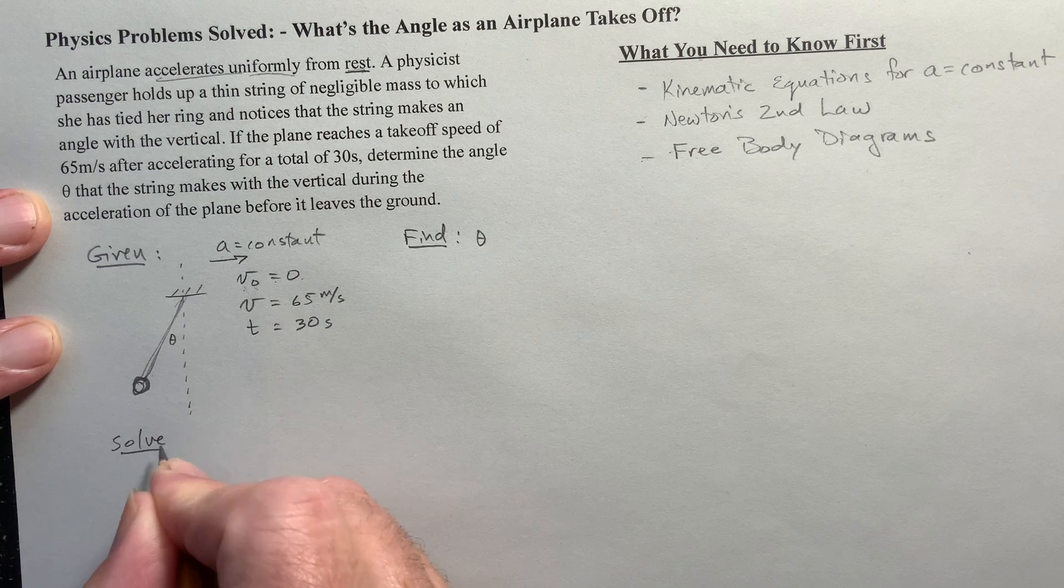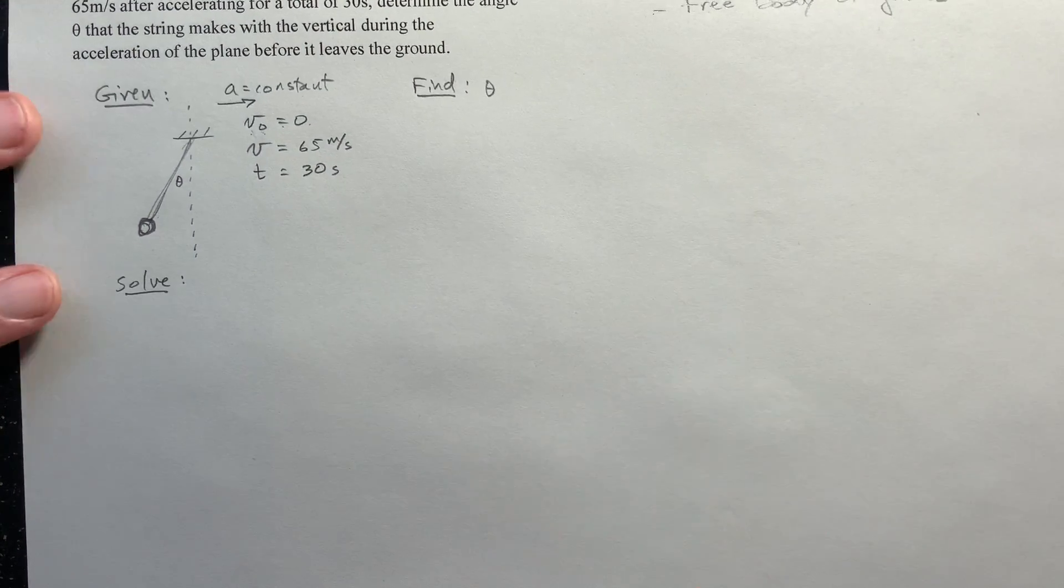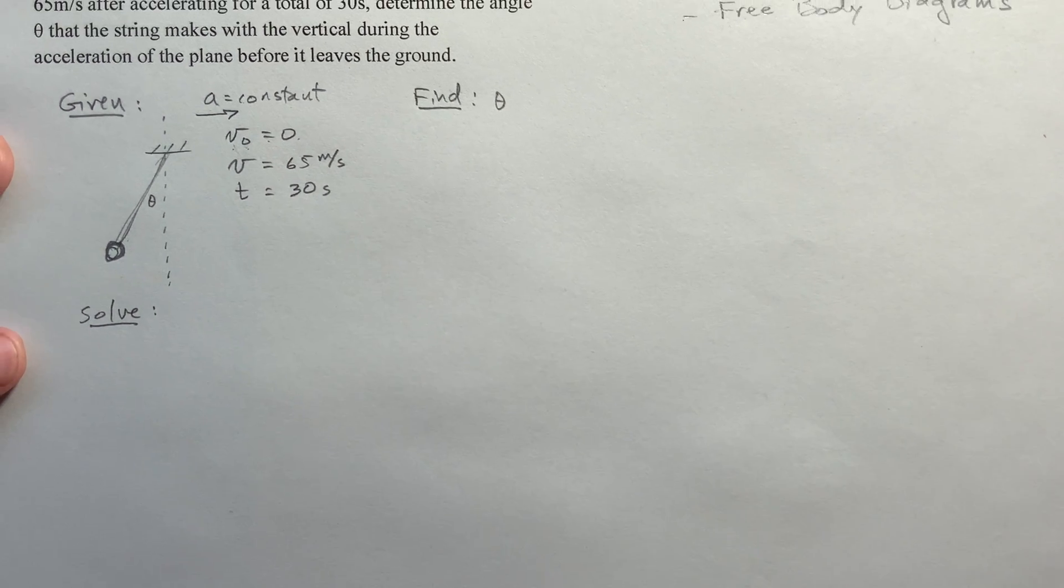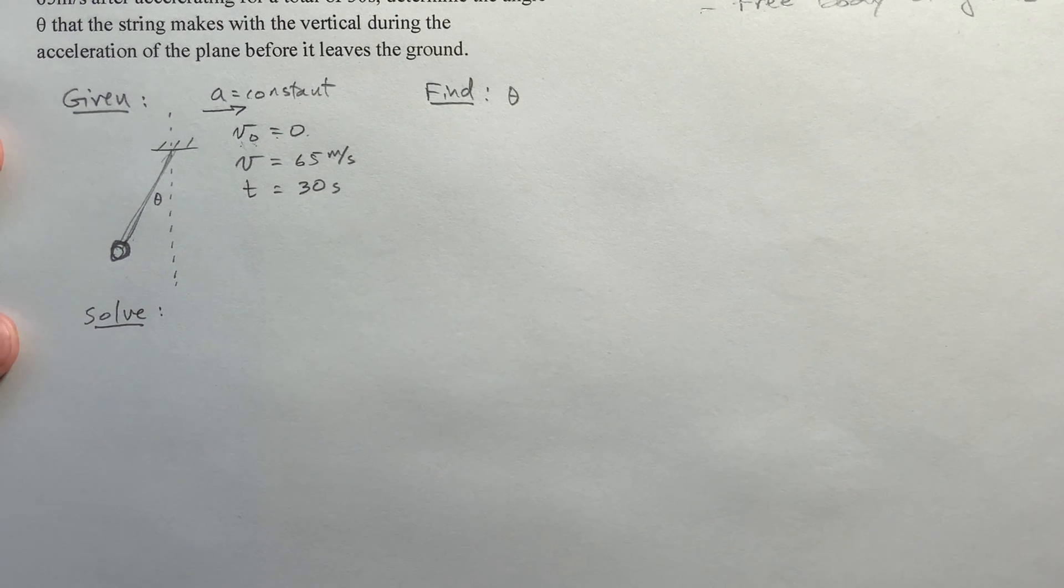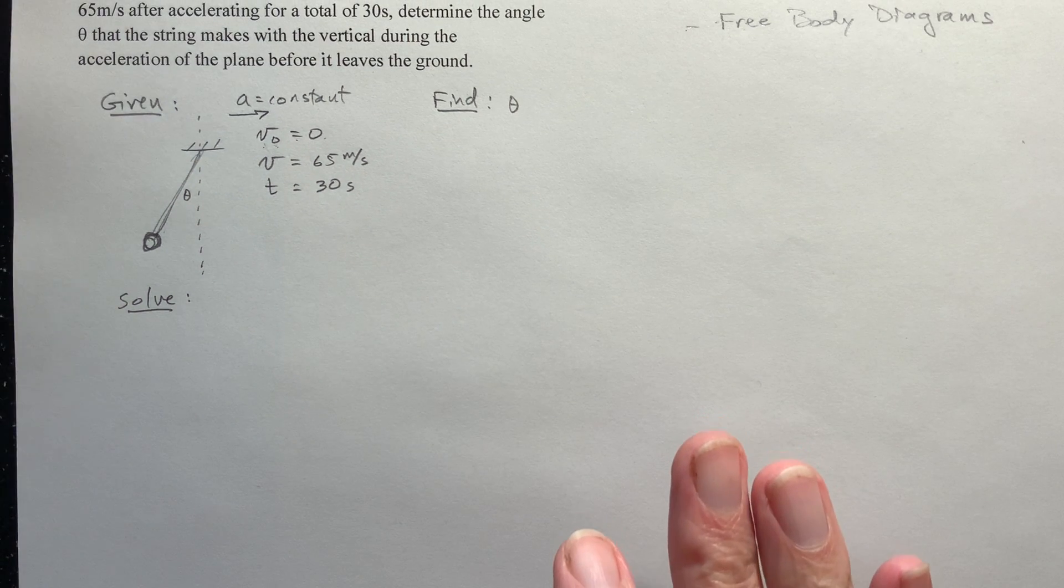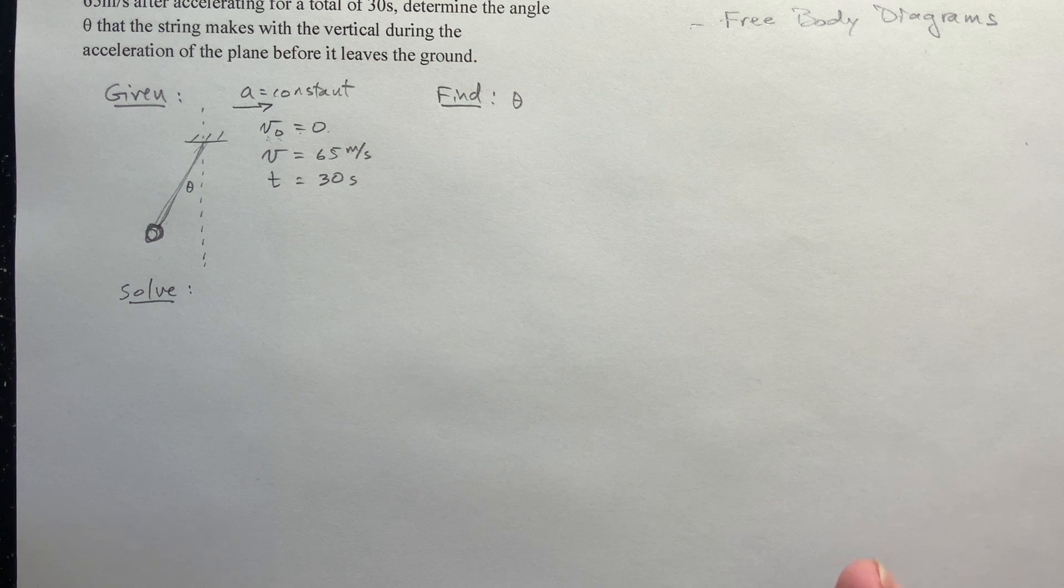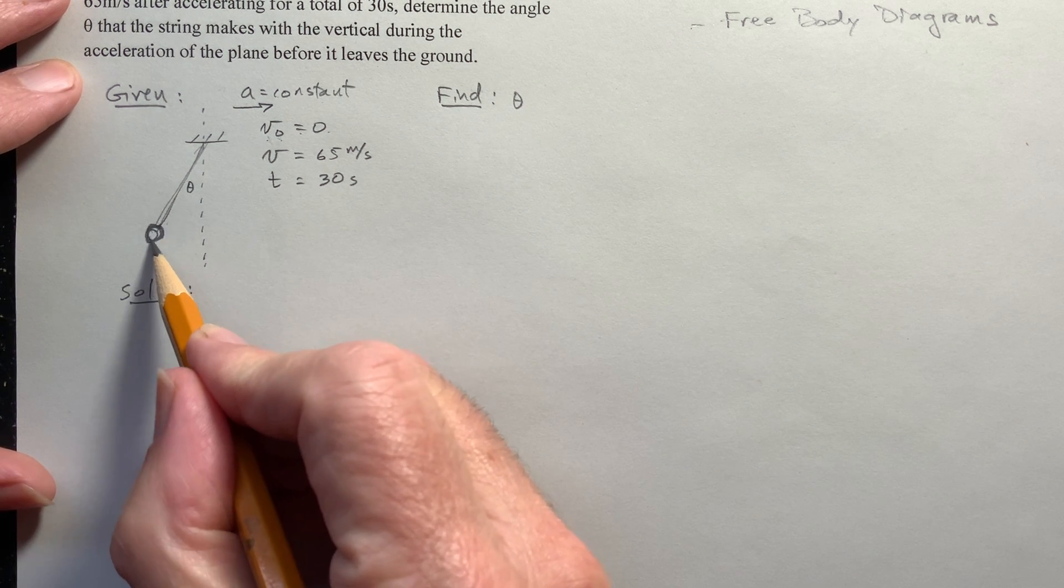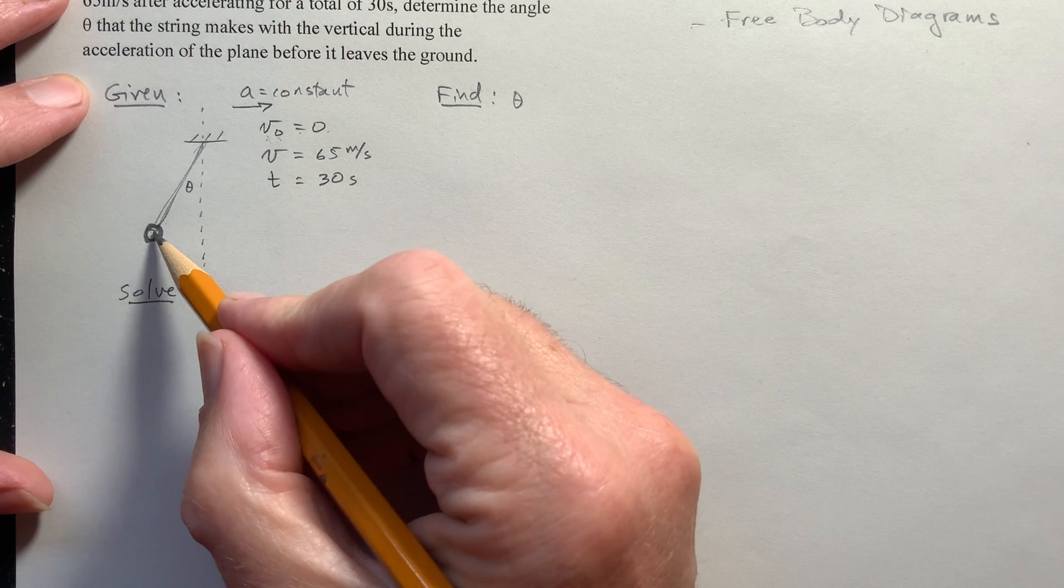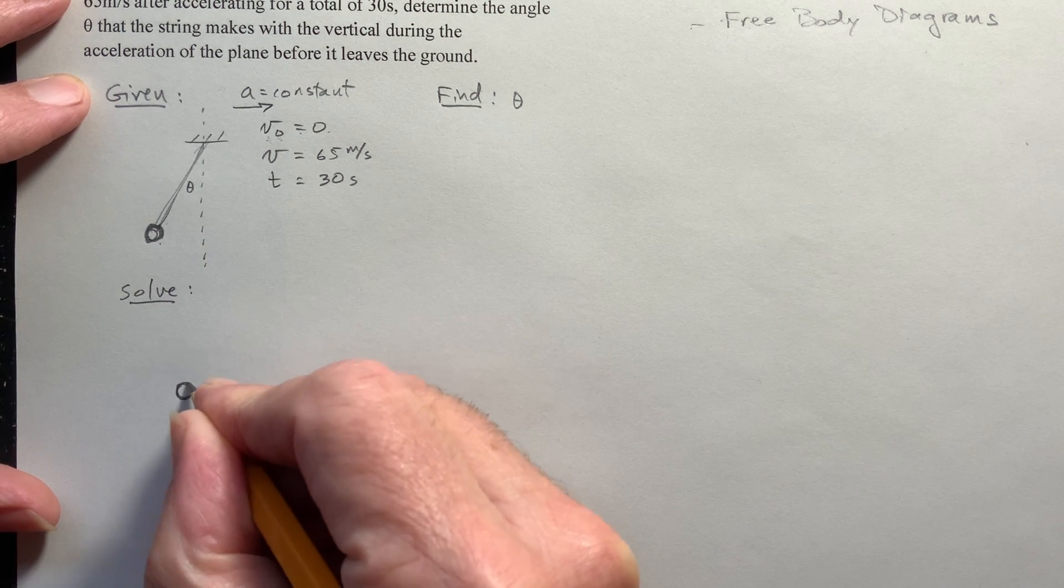Okay. Now, they don't tell us what the acceleration is, but they do give us some kinematic information. First of all, it says the airplane accelerates uniformly from rest. So, oh by the way, accelerates uniformly. That means a equals a constant. Now, that's important because if the acceleration is constant, that means I can use those kinematic equations. And we'll get to those in a minute.